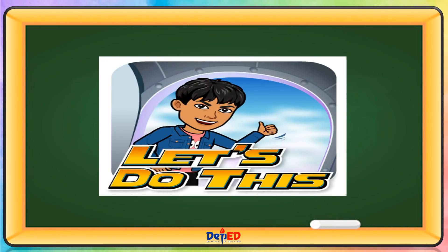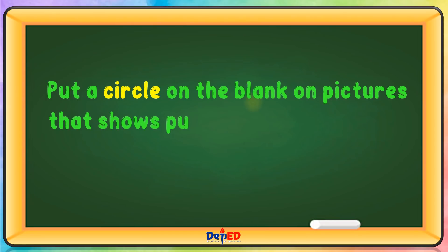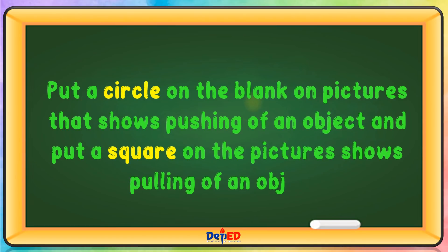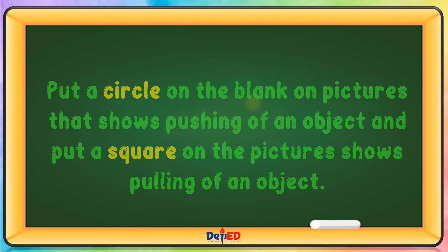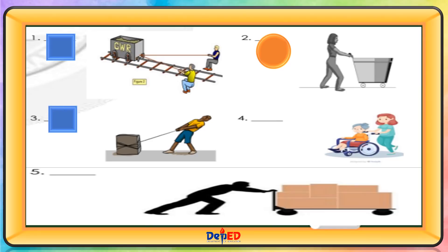Let's do this: put a circle on the pictures that show pushing an object and put a square on the pictures that show pulling an object. The first picture is square, the second is circle, the third is square, the fourth is circle, and the last picture is circle.